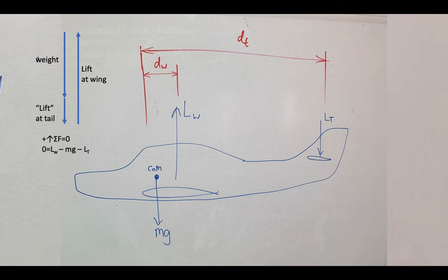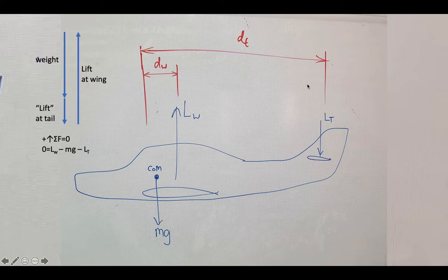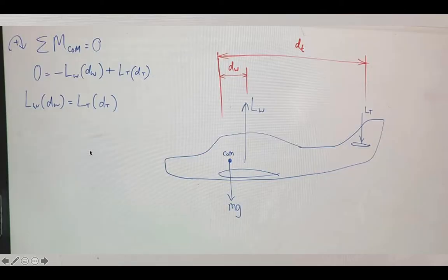From the perspective of the sum of forces, the vertical force generated by the lift of the wing equals the weight of the plane plus the downward force - the negative lift applied on the tail, or the horizontal stabilizer. So the sum of forces is zero: lift of the wing minus weight of the plane minus the negative lift on the tail. From the perspective of the sum of moments, measuring about the centre of mass, the weight multiplies by zero so we can ignore it.